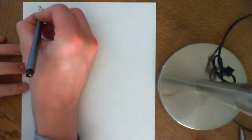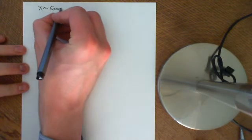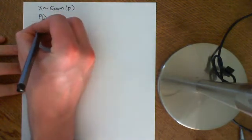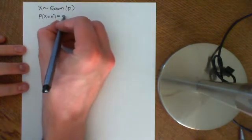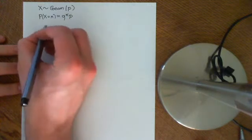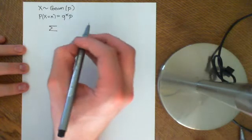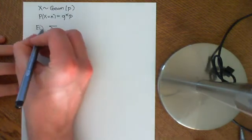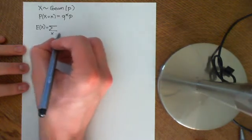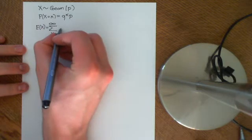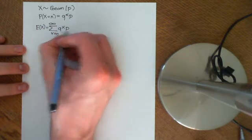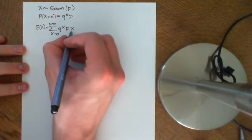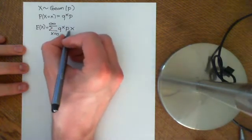That's the formula you will see in textbooks — the expected value of a random variable distributed binomially is np. Now let's do the geometric distribution that we saw in the previous video. Let's find the expected value. If x is distributed geometrically with parameter p, the probability that x equals little x is q to the x times p. The expected value of big X is the sum from x equals 0 to infinity of x times q to the x times p — this is the weighted average.